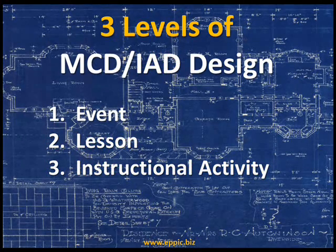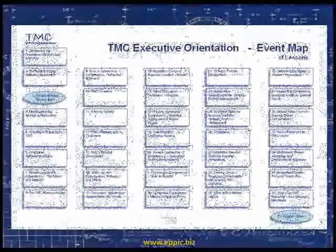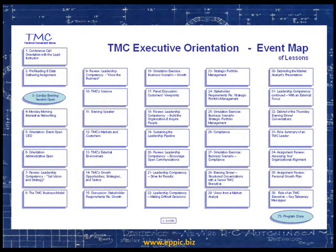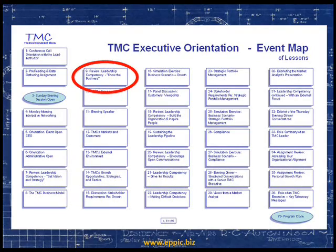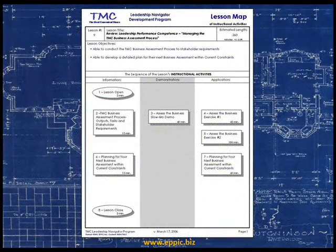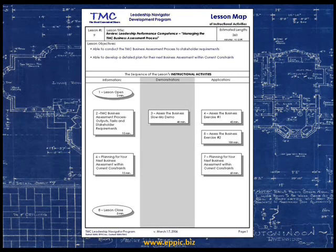Back to MCD and IAD design. An example of an event map of lessons is presented here. Some of these lessons may already exist in content currently available, and the rest might be gaps. When there are gaps, lesson maps are produced. These take the analysis data and structure it into information, demonstration, and application. However, there are not always applications and not always demonstrations as part of a lesson. Most of the time, a lesson minimally has information that's presented, but there are lessons where it could be singularly focused on a demonstration or an application.